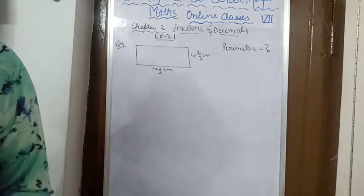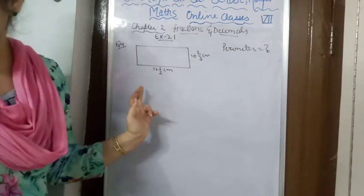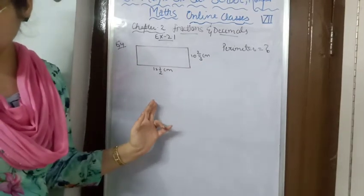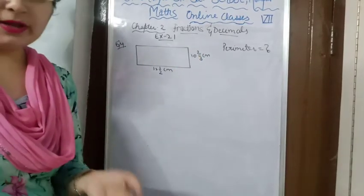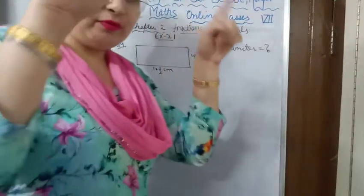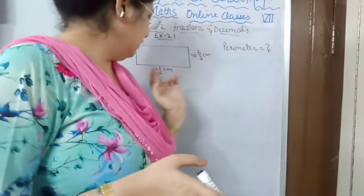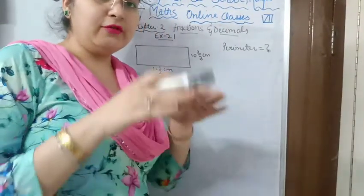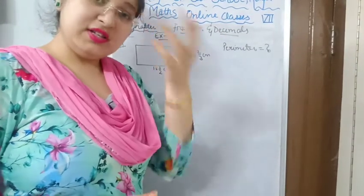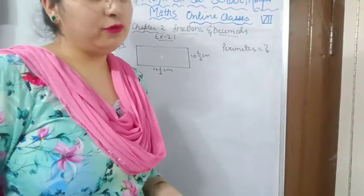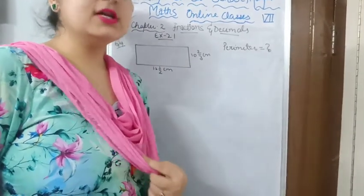They are saying a rectangular sheet of paper is 12 and 1 upon 2 cm long, and 10 and 2 upon 3 cm wide. Find the perimeter. So there is a sheet of paper whose length is 12½ and breadth is 10⅔. They are asking what is the perimeter. We have to apply the formula for perimeter of a rectangle because the shape of the page is a rectangle.